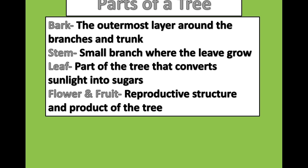There are four basic parts of the tree that can be used to determine the type of tree you are looking at. First is the bark, the outermost layer — tree species will have distinctive bark characteristics. The stem, which refers to smaller branches where leaves attach, can also be indicative of tree species. For example, maple, ash, dogwood, and buckeye all have opposite branching patterns.